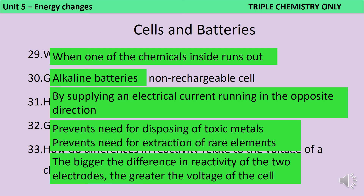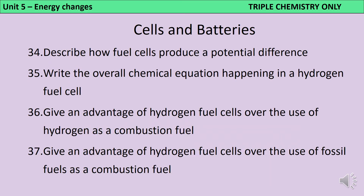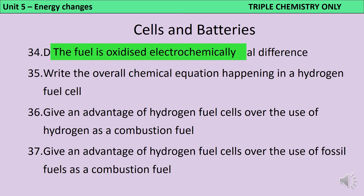The greater the difference in reactivity between the two electrodes in a chemical cell, the greater the voltage of the cell will be. Fuel cells produce a potential difference from the electrochemical oxidation of a fuel such as hydrogen or methanol. The overall chemical equation that happens in a hydrogen fuel cell is two hydrogen molecules reacting with one oxygen molecule to produce two water molecules. Using hydrogen fuel cells rather than hydrogen as a combustion fuel is much more efficient because there isn't any heat loss.